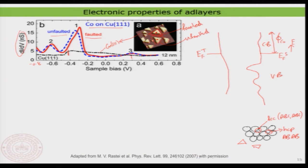What is striking is that faulted and unfaulted islands show a clear difference in their electronic structure. The way cobalt atoms bind to copper — with slightly different adsorption or binding energy — causes a slightly different interaction. This results in a slight shift in the D-band density of states between faulted and unfaulted islands. This is exactly why scanning tunneling spectroscopy is so powerful: you can perform measurements at a purely local level, which would otherwise be impossible.